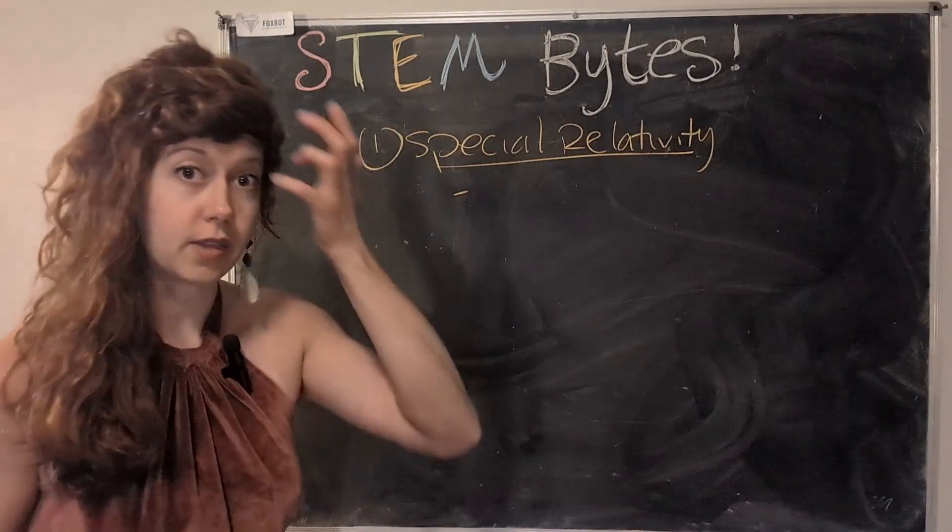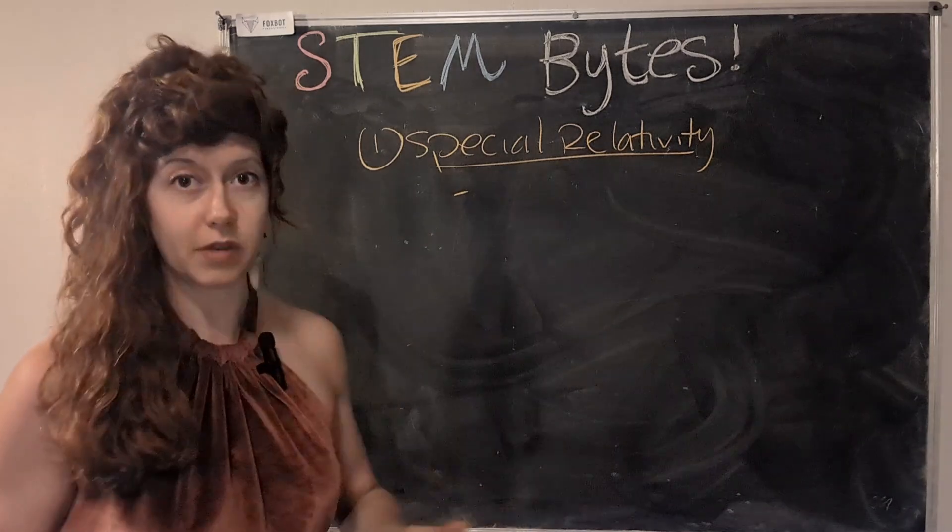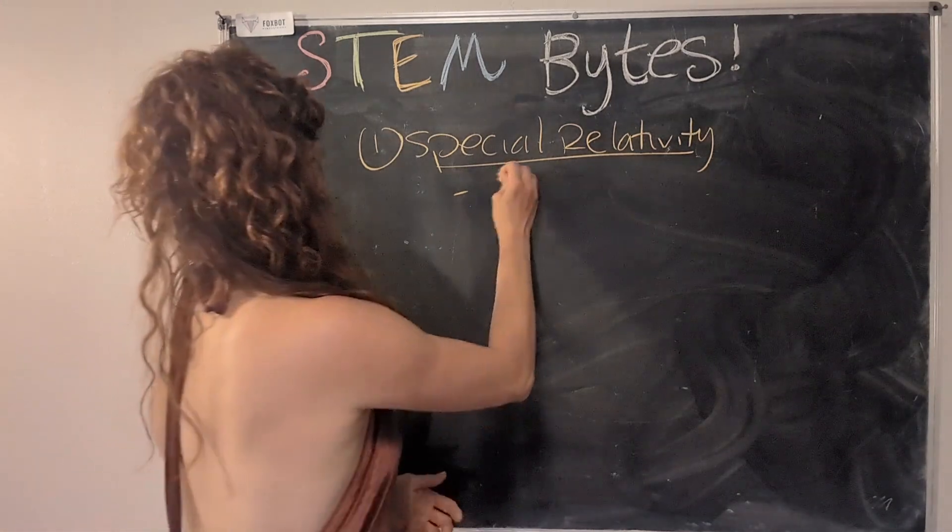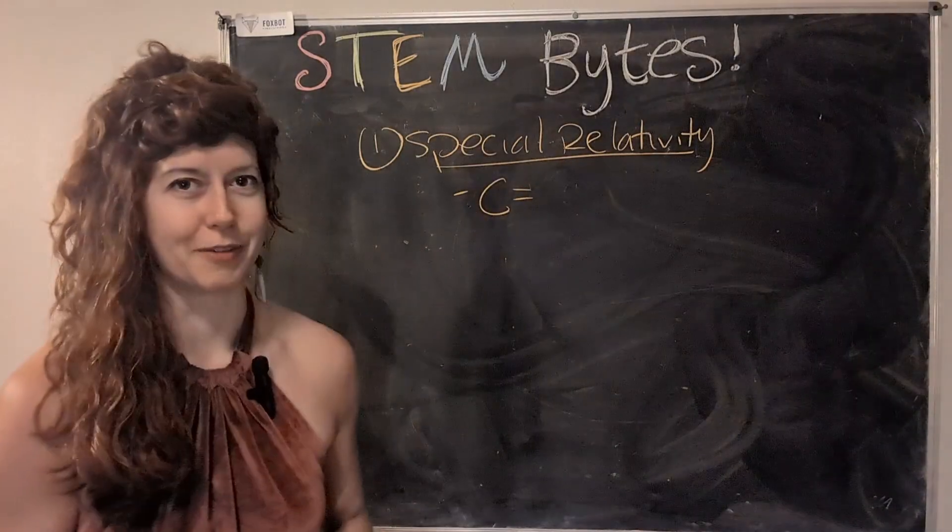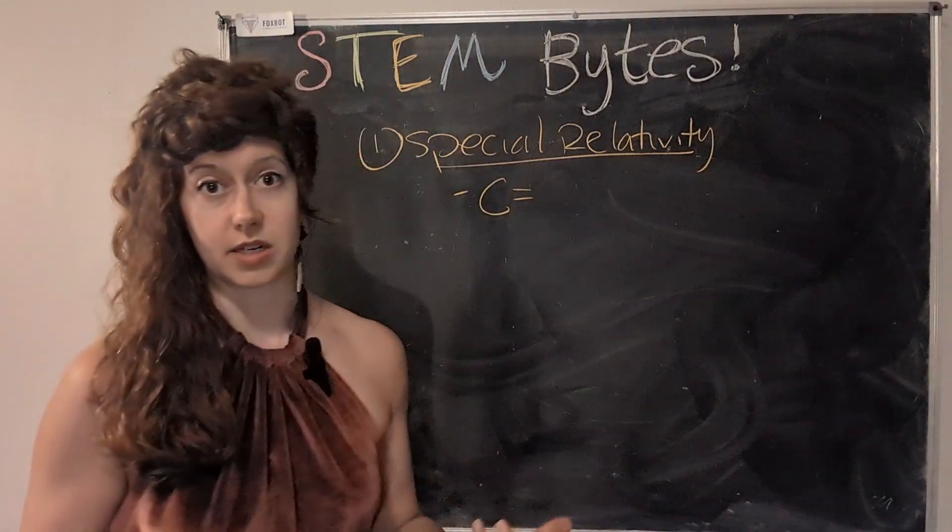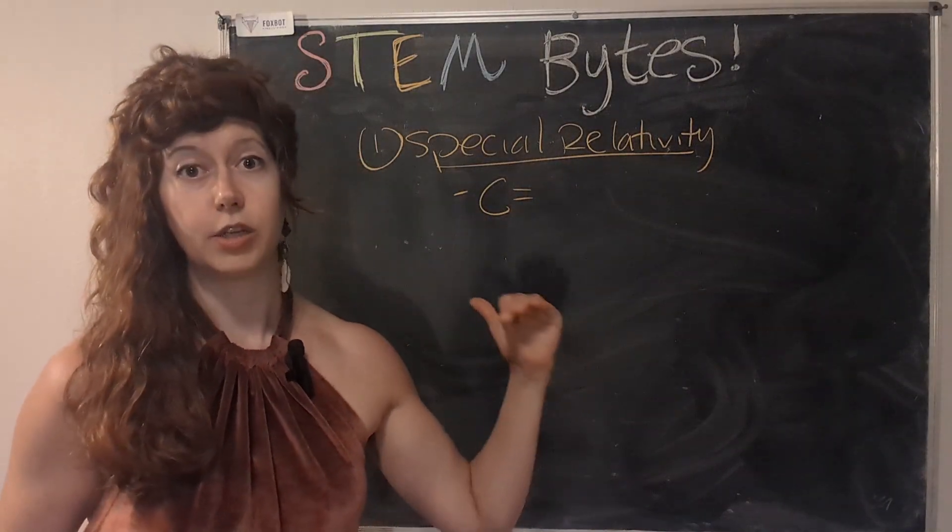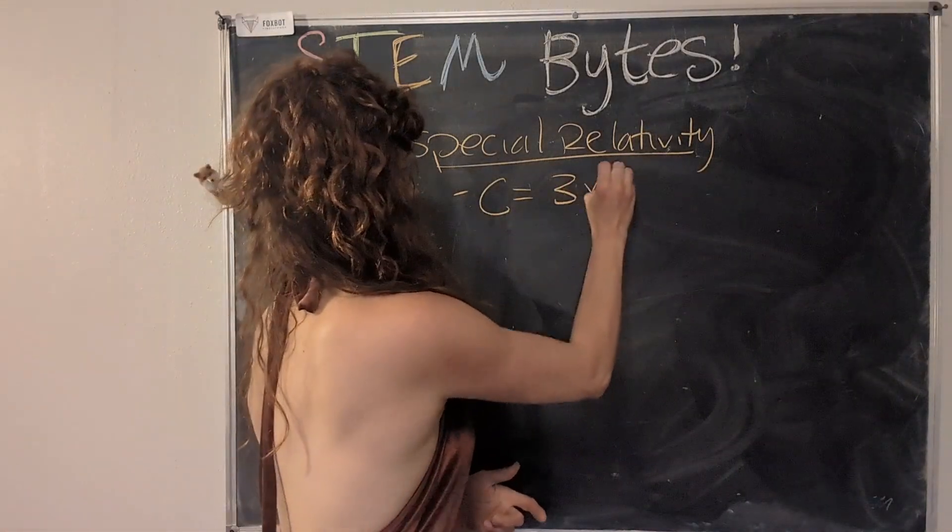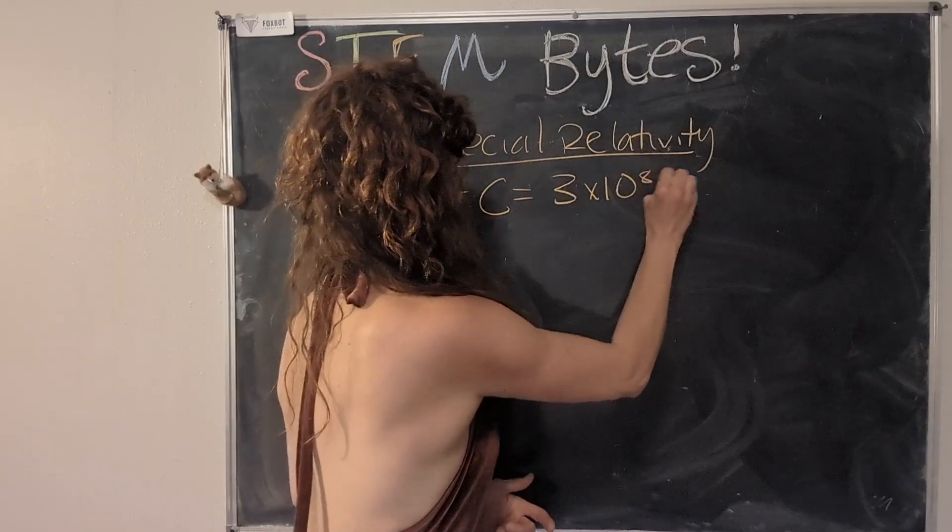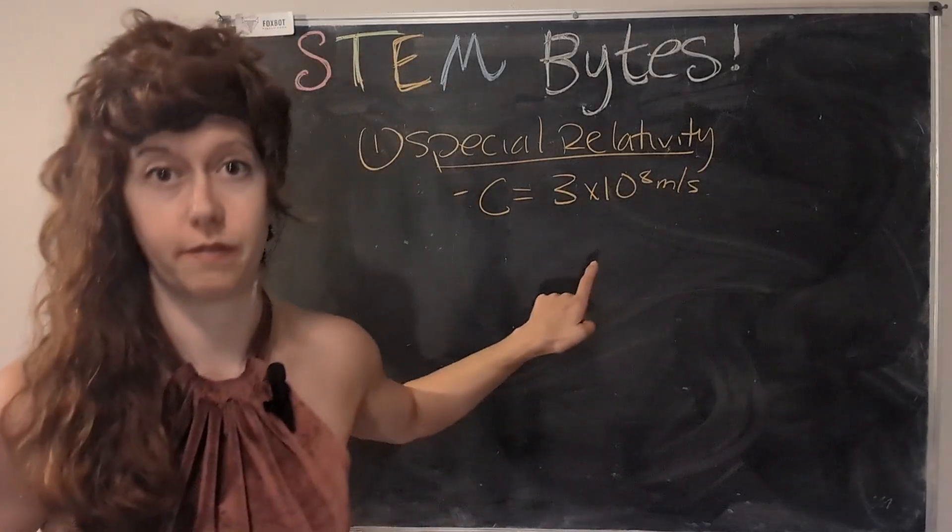The first kind of funky thing that in special relativity that Einstein discovered is that the speed of light or C, that's the variable. Look, it's a sideways smiley face, is a constant. No matter how fast you move, you will always measure the speed of light as being 3 times 10 to the 8th meters per second, which is really fast.